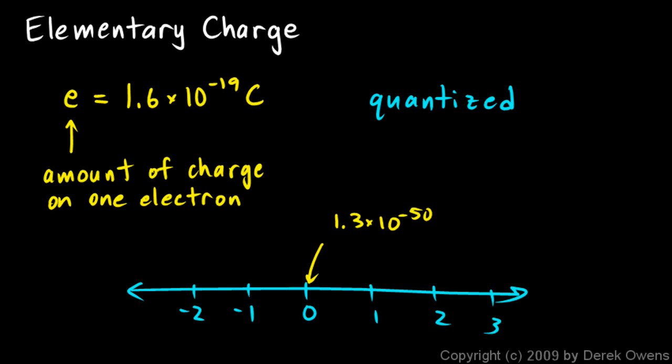So in your mind, you can contrast the word quantized to the word continuous. We say that the number line is a continuum. You can have any number, and there's no gaps or no holes or no spaces on the real number line. But charge is quantized. It only comes in discrete amounts.